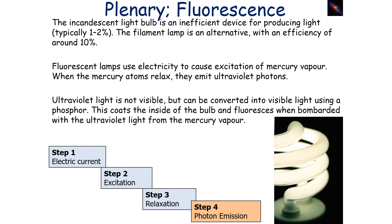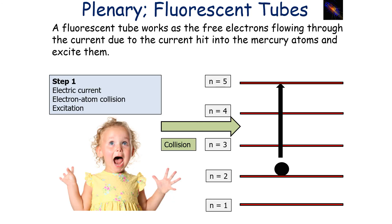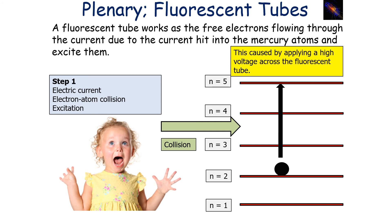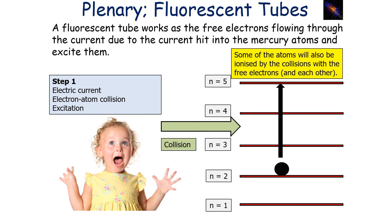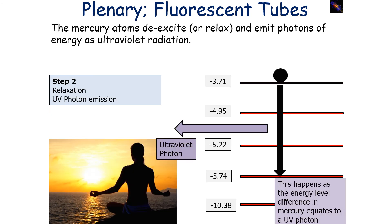Let's look at the steps behind a fluorescent tube. Free electrons flowing through the current collide with the mercury atoms and excite them. This is caused by applying a high voltage across the fluorescent tube, producing an electrical current, electron–atom collisions, and therefore excitation. Some atoms will also be ionised by collisions with free electrons and each other. The mercury atoms then de-excite and emit photons of energy as ultraviolet radiation — this happens because the energy level differences in mercury equate to the production of a UV photon.